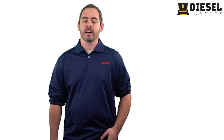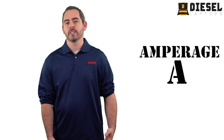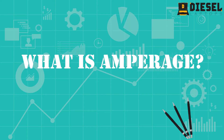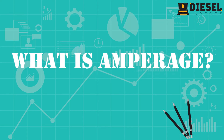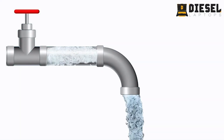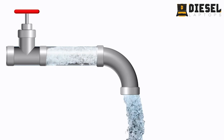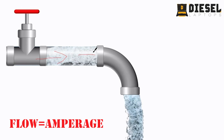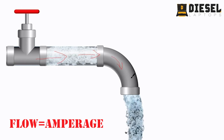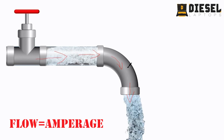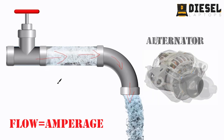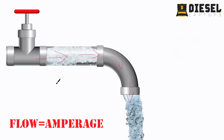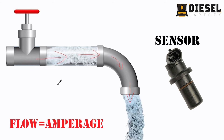The second thing we're going to see a lot as technicians is amps or amperage. What is amperage? Imagine again the water pipe analogy. If the pressure on the inside of the pipe is like our voltage, then the flow of water through our pipe would be like our amperage. Amperage in a circuit is a measurement of the flow of electrons through the circuit. A high flow of water through our pipe is equivalent to a high amperage circuit like an alternator or a starter circuit. A low flow through the pipe is equivalent to something like your engine sensors, which are a low amperage circuit.